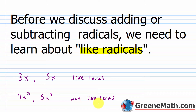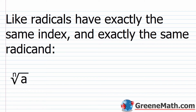They were not like terms because you had to have the same variable — which in both cases you do — but the kicker is you also have to have the same exponential power. In this case, you have a 2 and a 3, so they're not like terms. Similar to this, we have like radicals. Like radicals have exactly the same index and exactly the same radicand.